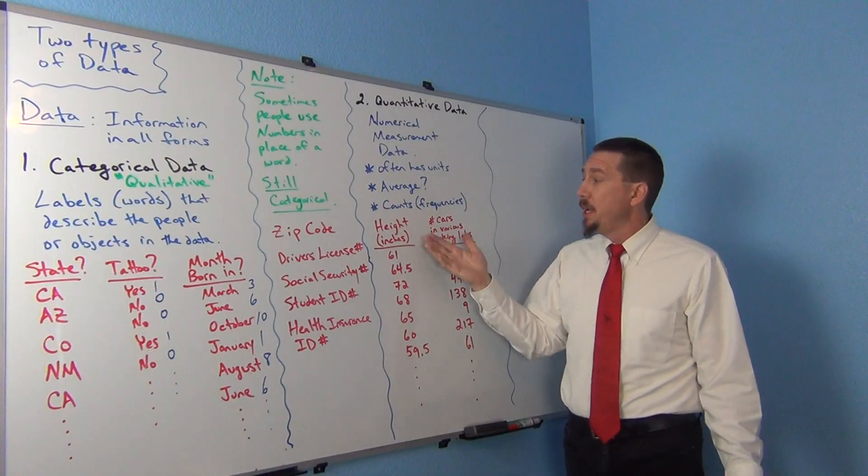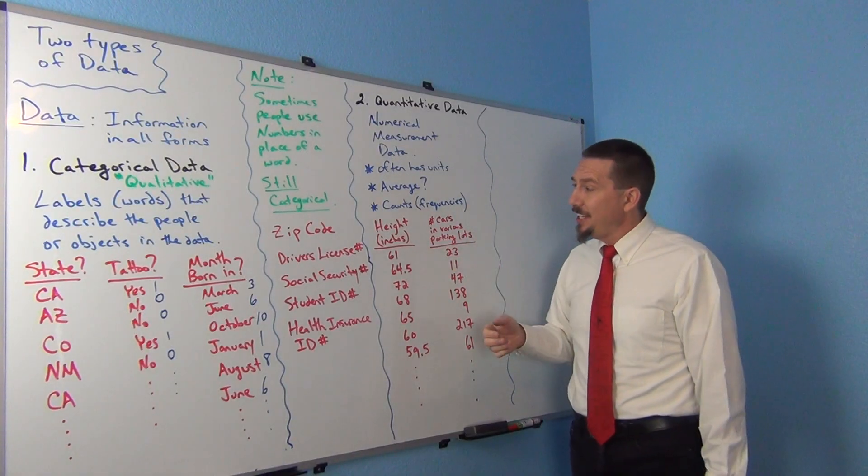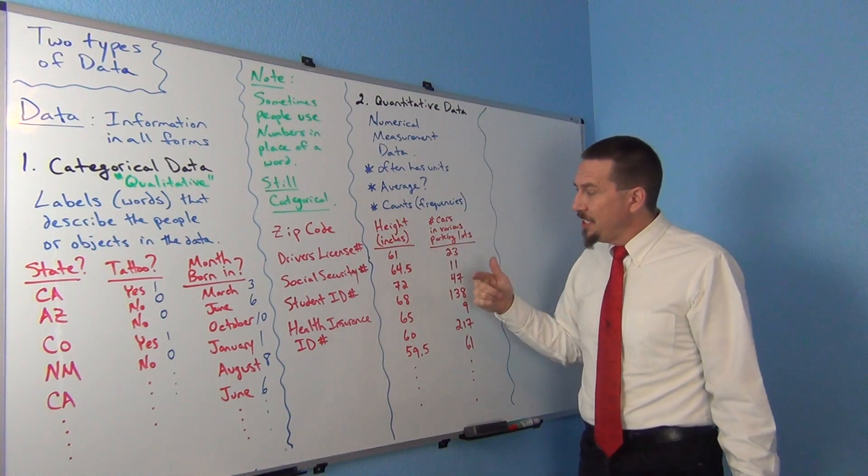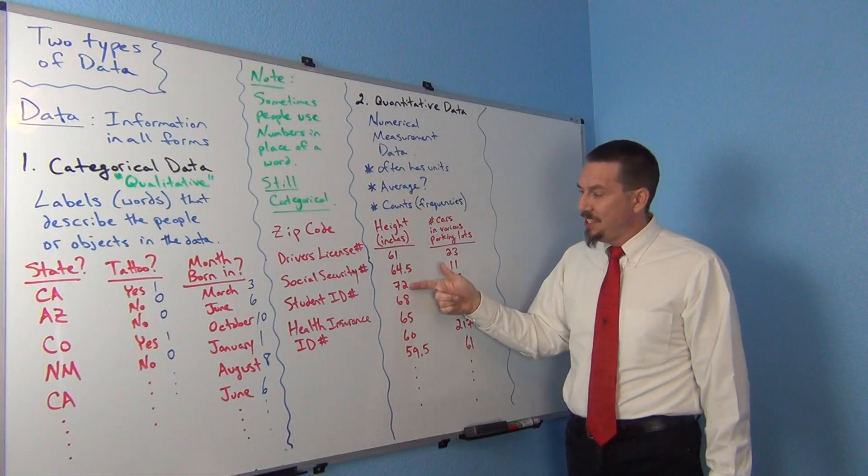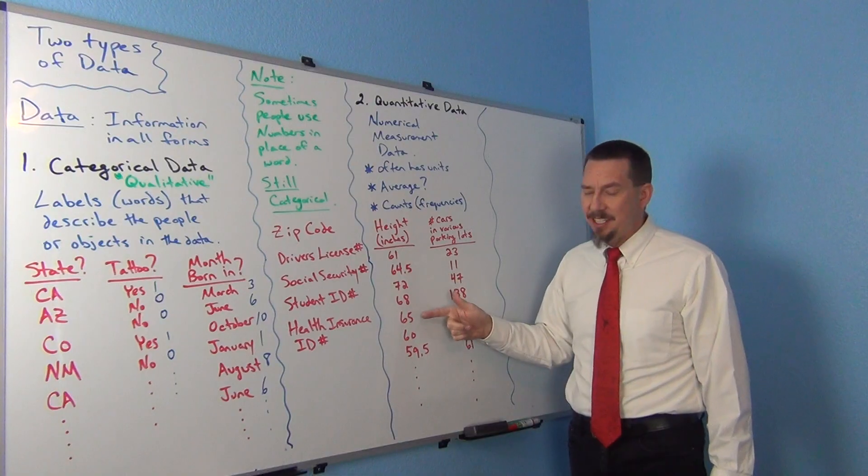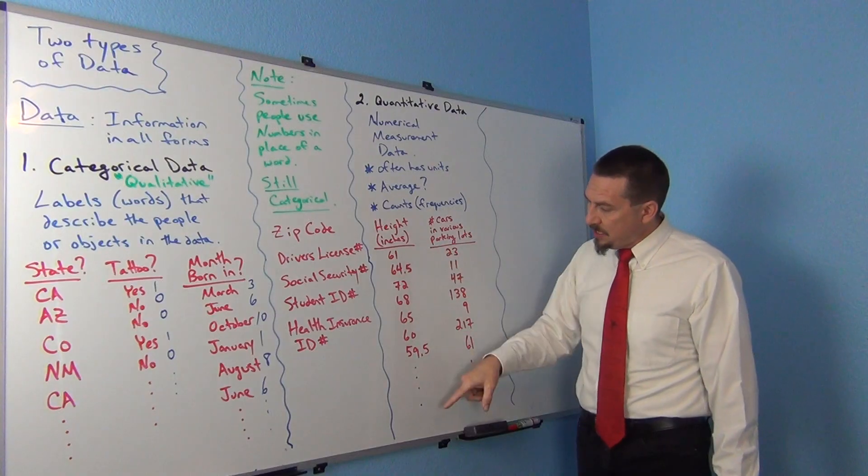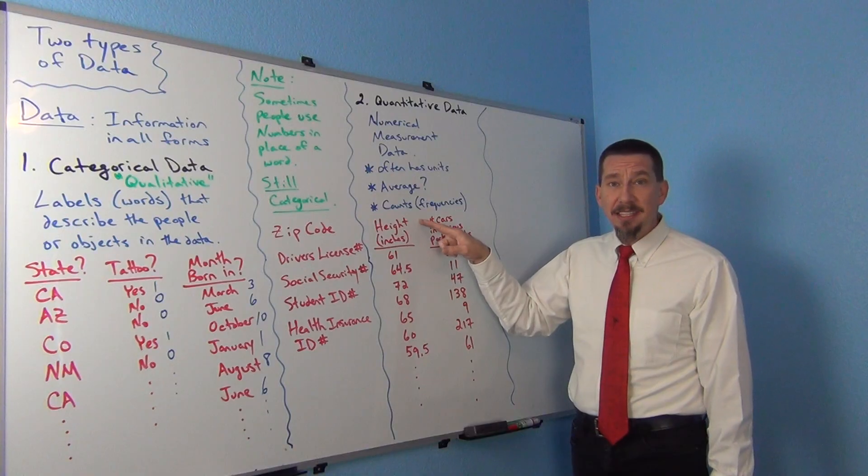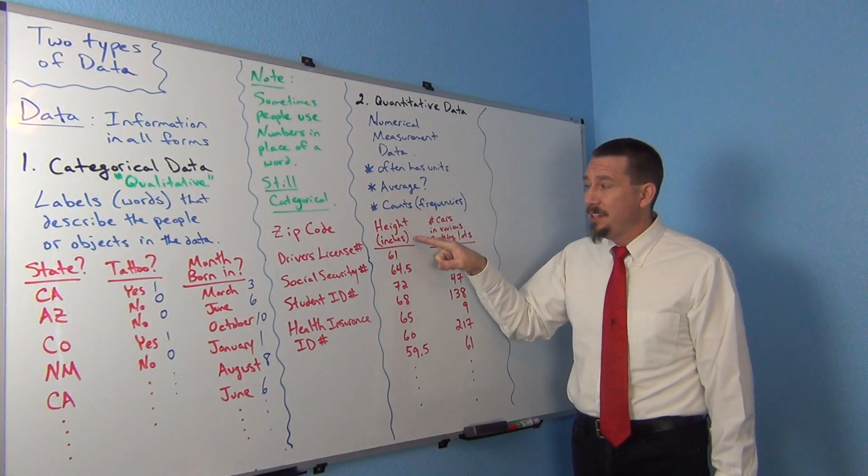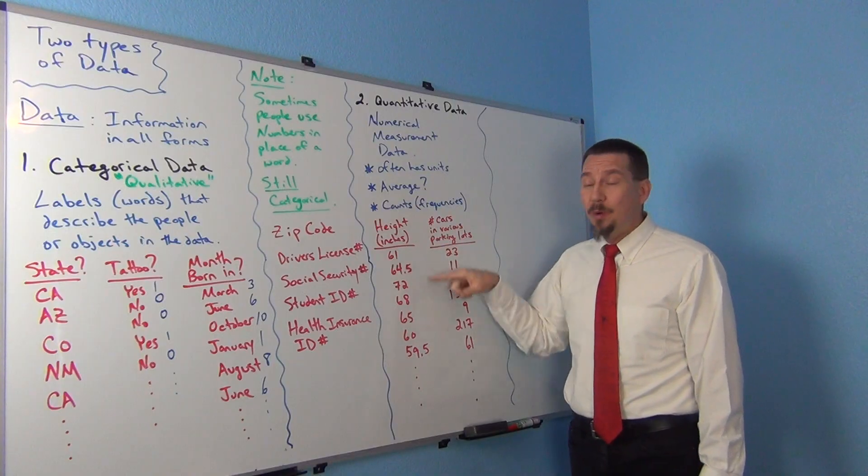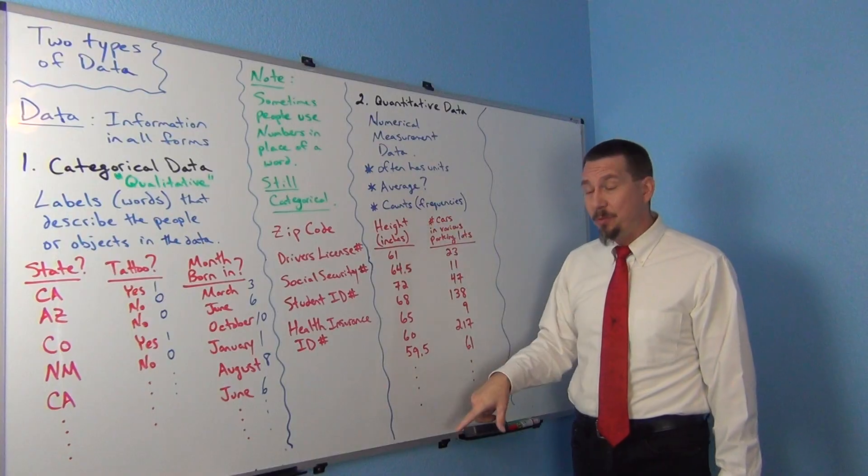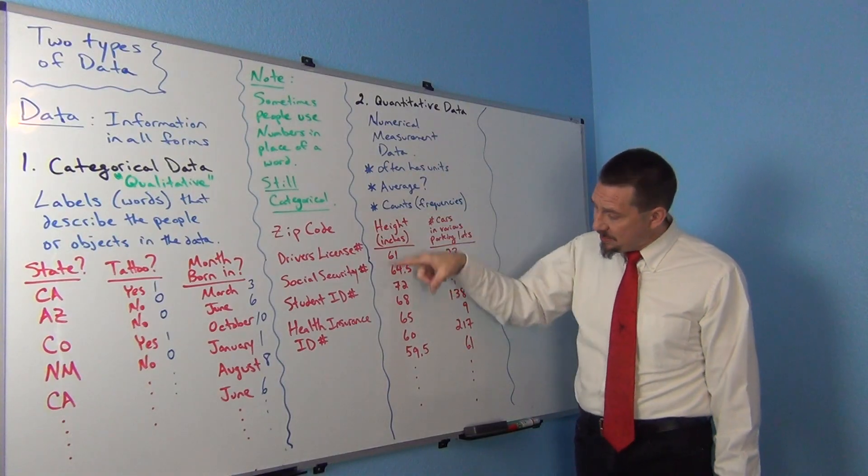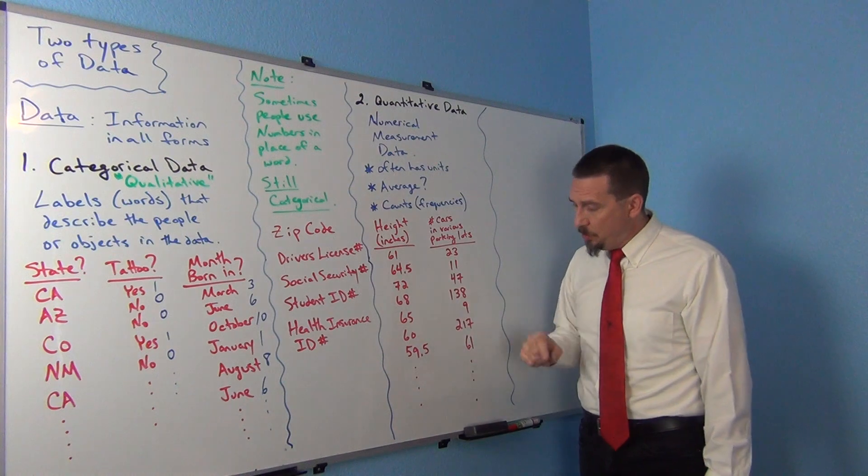So zip codes are not quantitative. I wouldn't take an average of them. So a lot of times in a quantitative data set, you're almost always looking at some kind of type of average. Also, they can be just counts or frequencies from various places or groups. So if you think of counts or frequencies, does it have units, averages, some kind of numbers that are measuring something? So some prime examples. If I asked people their height or I measured them with a tape measure. Maybe their height in centimeters or in inches.